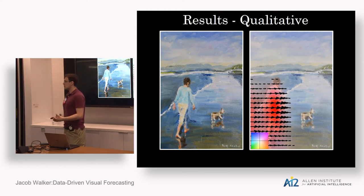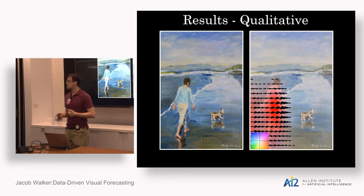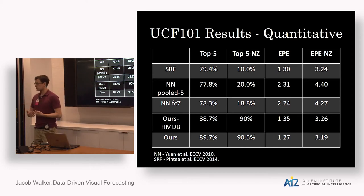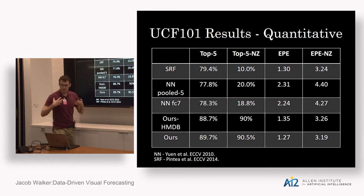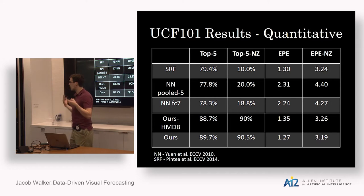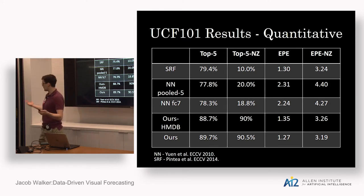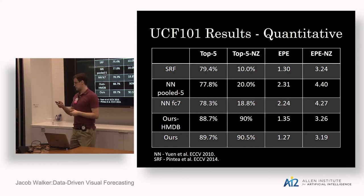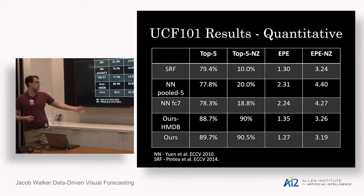For quantitative evaluation, using endpoint error isn't helpful due to ambiguity. Instead, at every pixel, we produce a distribution over optical flow motions, rank them by probability, look at where the ground truth optical flow falls in that ranking, and report how often the ground truth comes within the top five or top ten. By this metric, we can see a clear difference between our CNN approach and baselines like nearest neighbor or structured random forests. We evaluate on both UCF-101 and HMDB datasets.